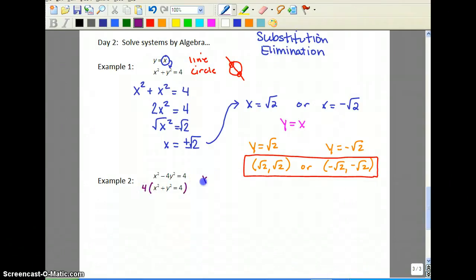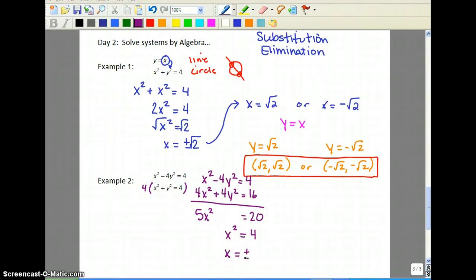So the top one doesn't change. x squared minus 4y squared equals 4. But the bottom one becomes 4x squared plus 4y squared equals 16. So we add that together. We'll get 5x squared equals 20. Divide by 5. x squared is 4. Take the square root and get plus or minus 2.